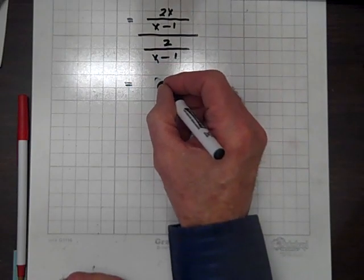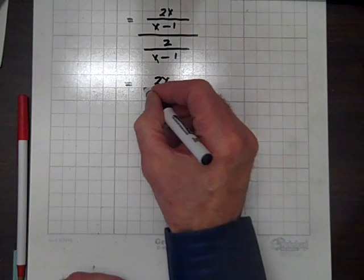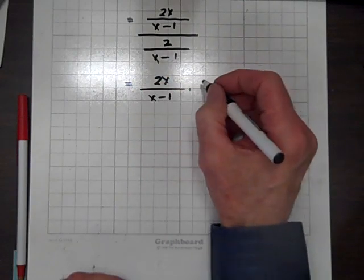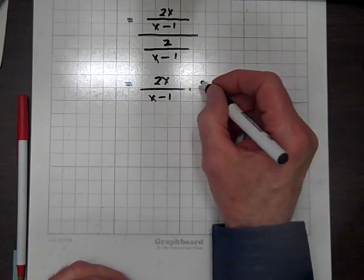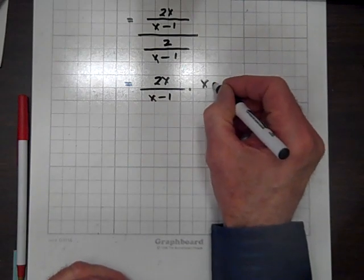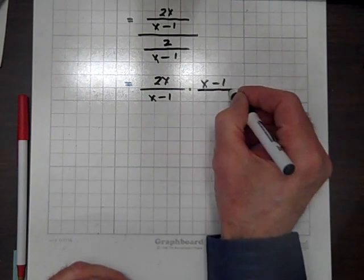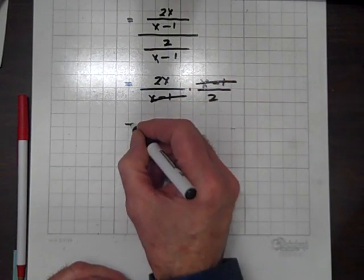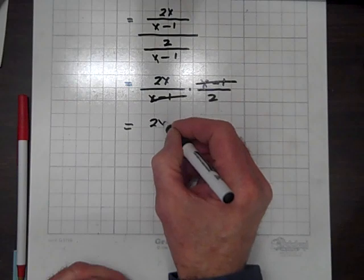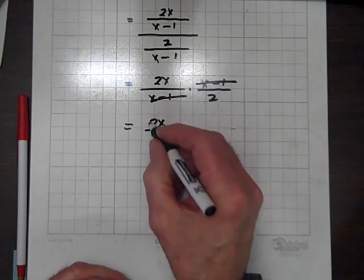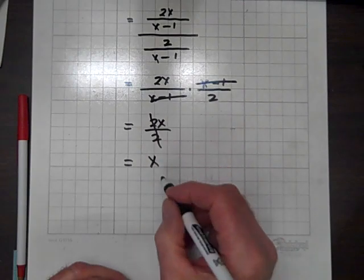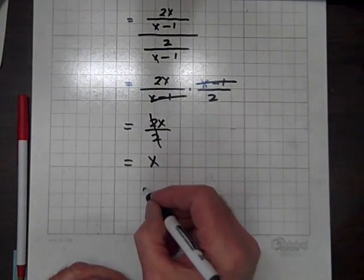We can invert and multiply: 2x over x minus 1 times, changing division to multiplication, x minus 1 over 2. The x minus 1's divide out, and we're left with 2x over 2. The 2's divide out, and we have x, and we are done.